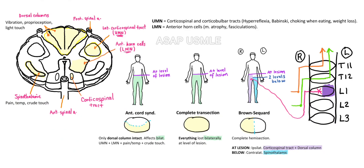Moving on to complete transsection. This one is pretty straightforward. Your entire spinal cord is affected, meaning you will lose everything — sensation and motor — bilaterally at the level of the lesion and below.